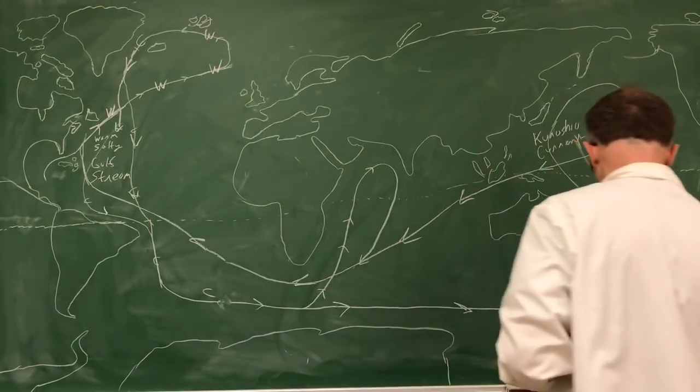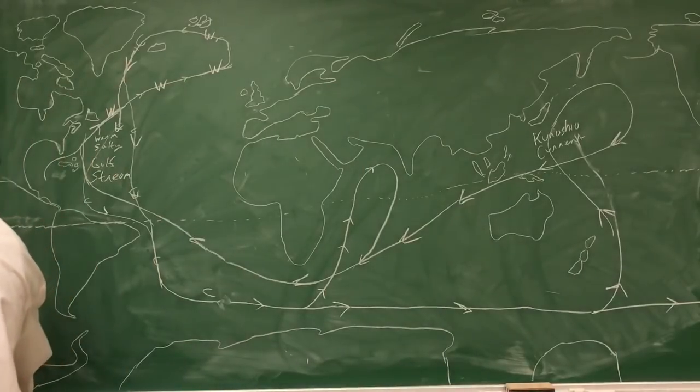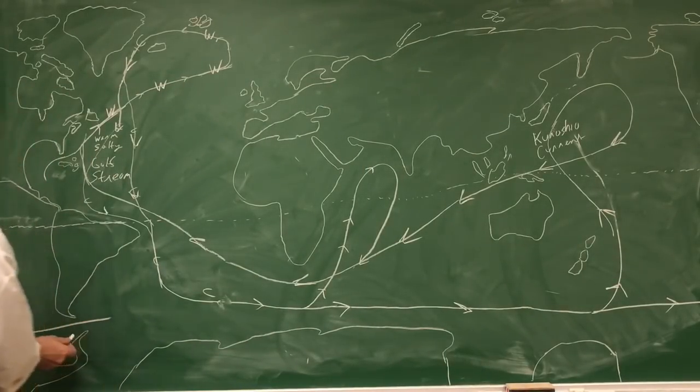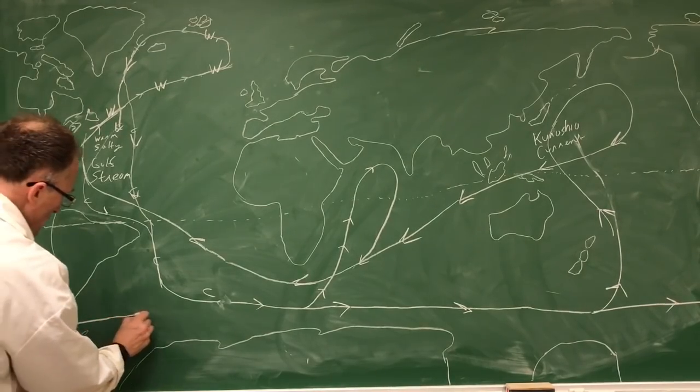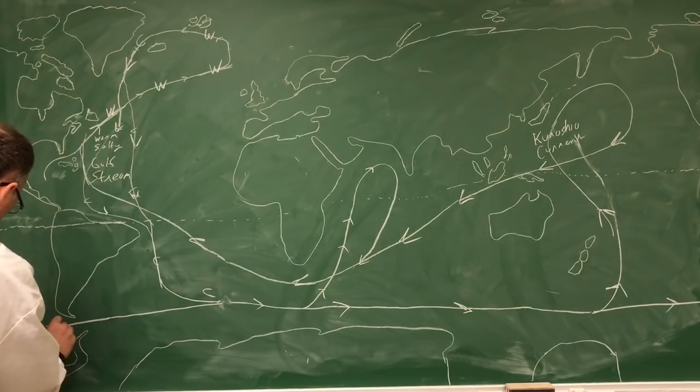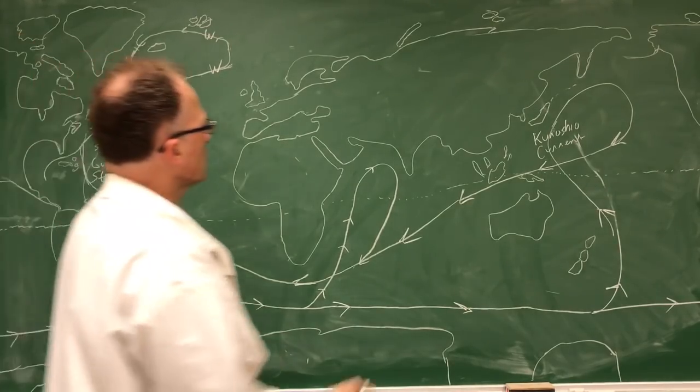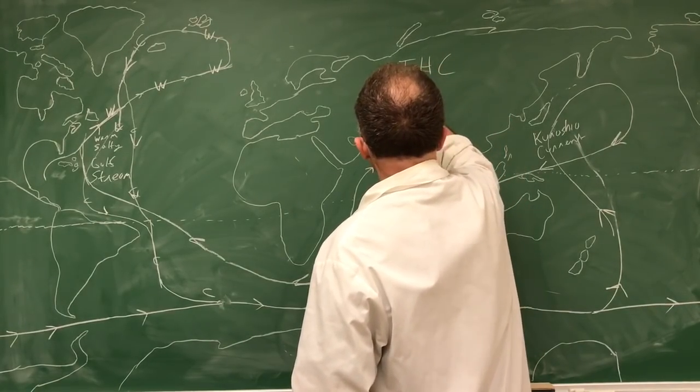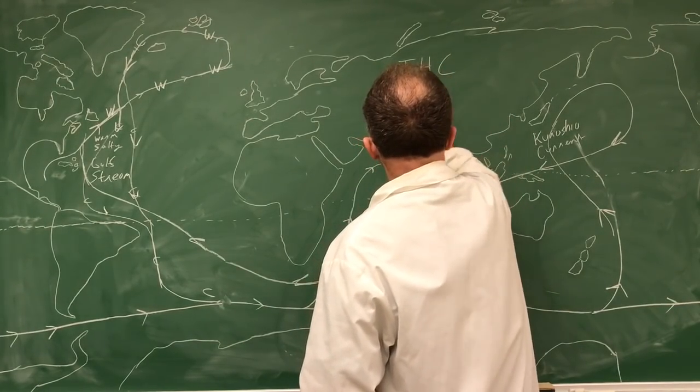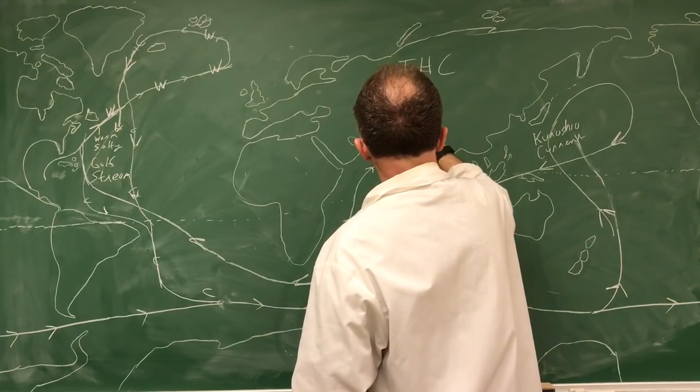Also, there's a chunk here that splits off and goes through the Drake Passage between the southern tip of South America and Antarctica, and it joins the cold water here. So this is called the THC if you like. T is thermo, heat; haline is salt; and circulation.